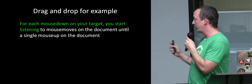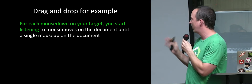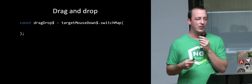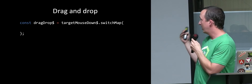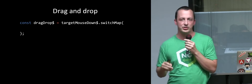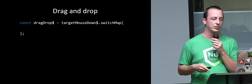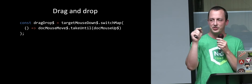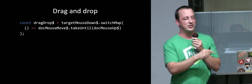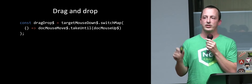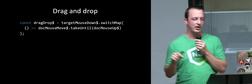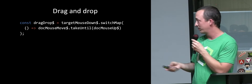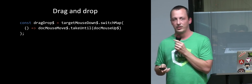We look at what we're doing with drag-and-drop, focusing on mouse moves on the document until a single mouse up. Mouse movements on the document until a single mouse up looks like this: we've got document mouse moves, take them until a document mouse up. Take those values until this other observable fires one time. But we didn't want to start doing that until we have a mouse down on our target.